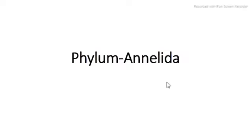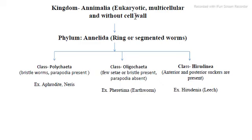Annelida means rings. 'Anneli' means rings and 'da' refers to worms. These are worms or animals with a ring-like structure. This phylum is commonly called ringed worms. Examples include Aphrodite, Nereis, Earthworm, and Leech — these four animals represent the phylum.